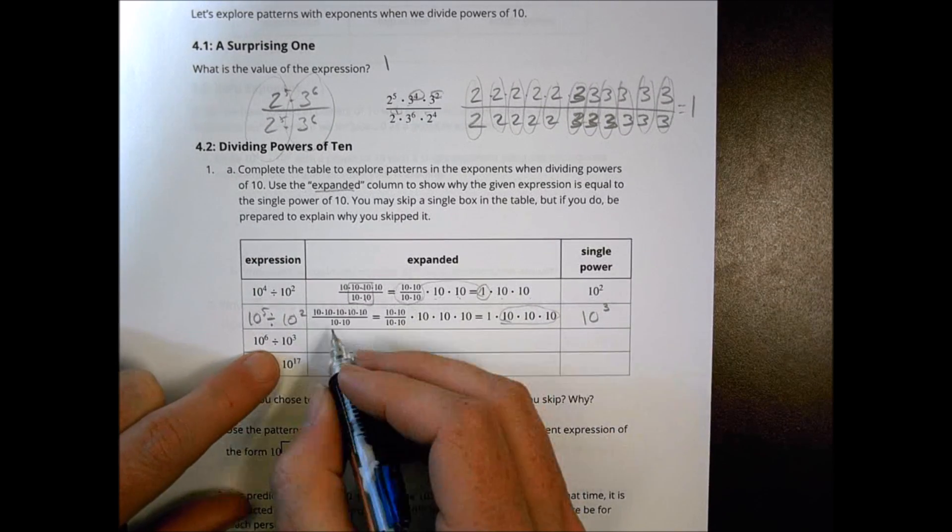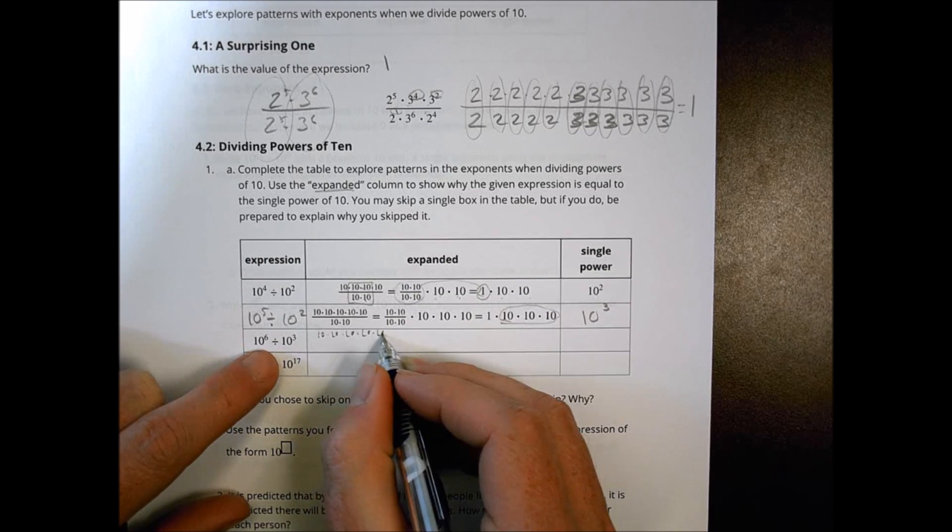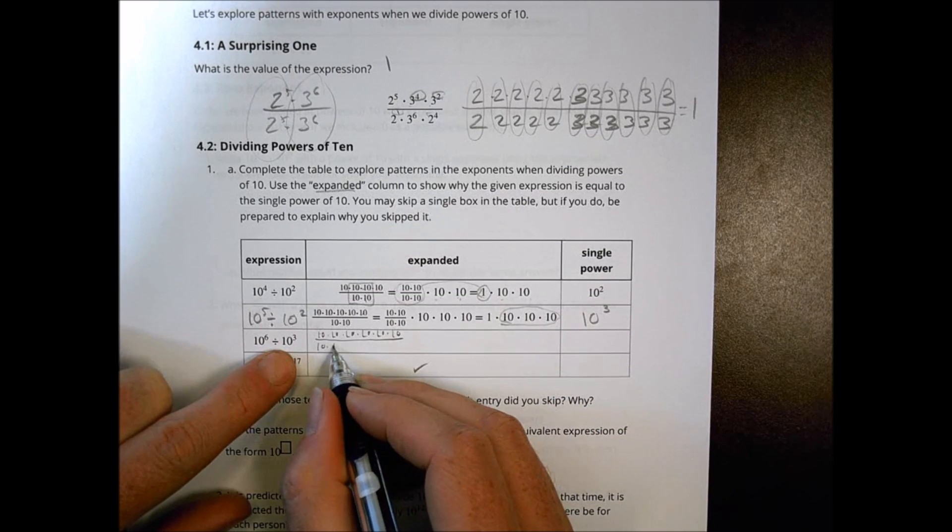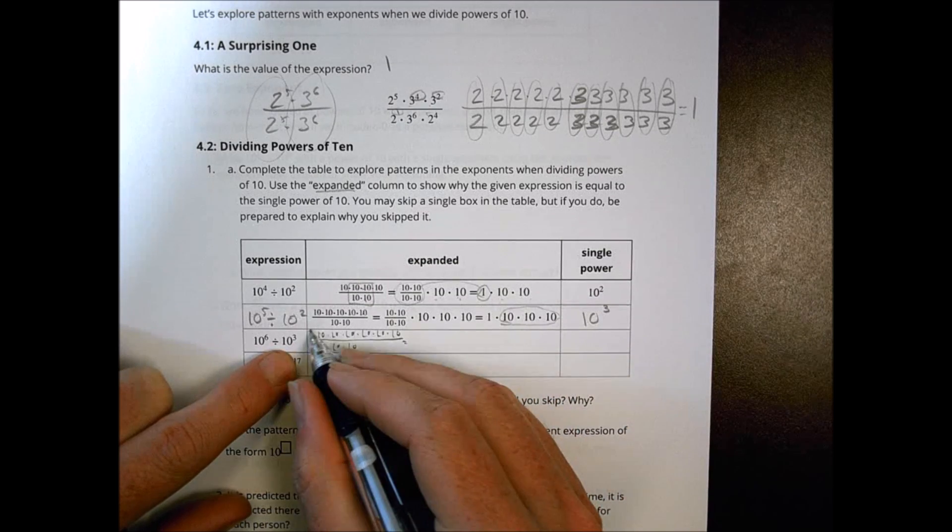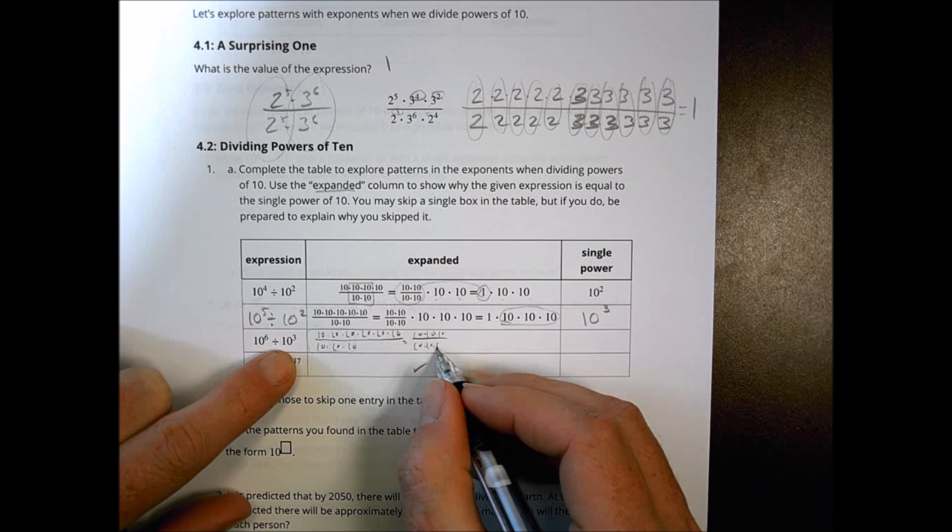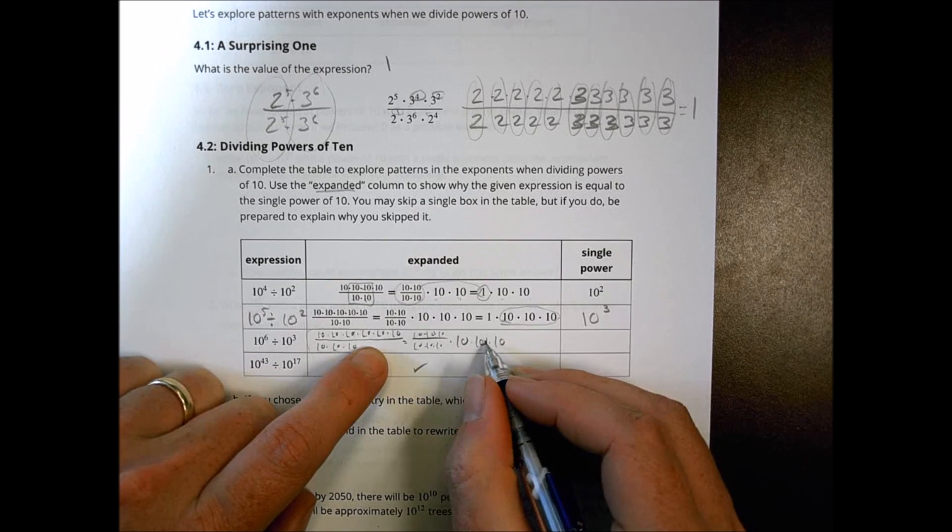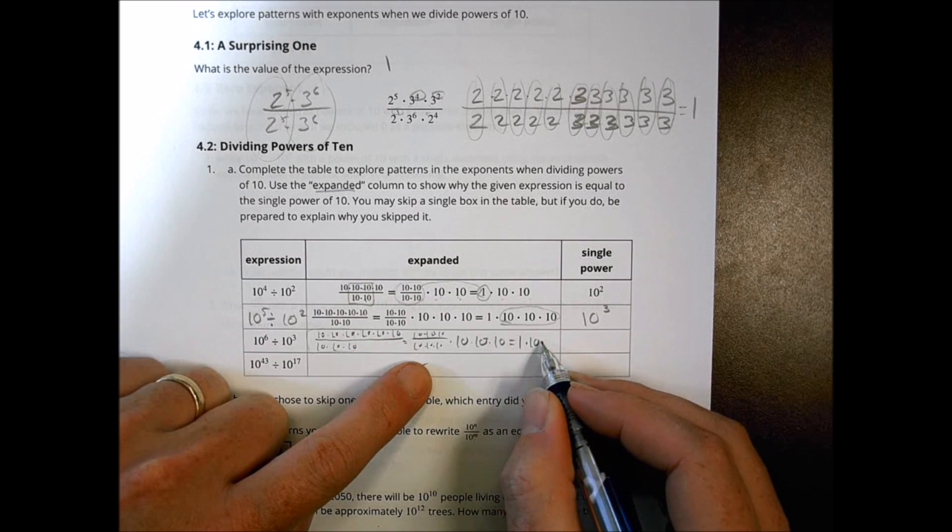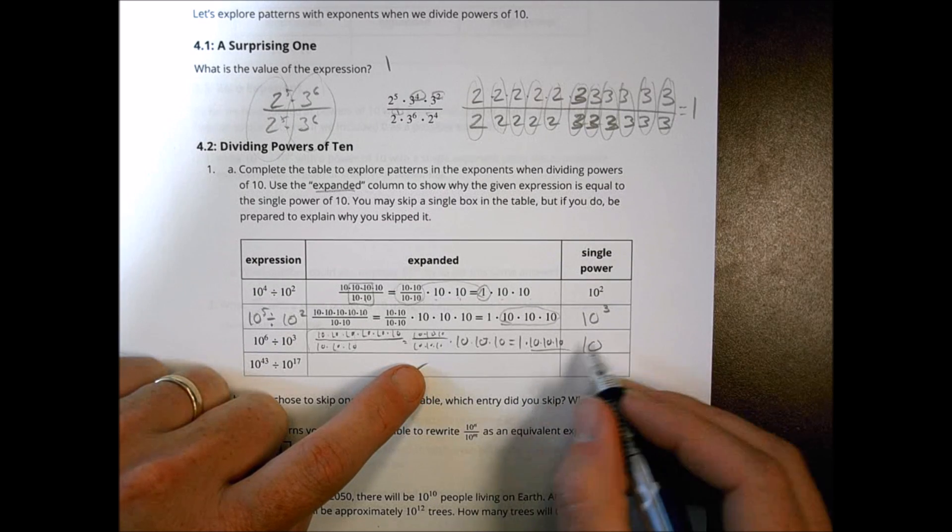Let's do this one here. We're going to put six tens on top, so one, two, three, four, five, and six. We're going to divide that by three of them, one, two, and three. So I'm left then, that all becomes a little cluster of one, right, ten, ten, ten, over ten times ten times ten. I'm left with still a ten, and a ten, and a ten. So that all becomes one times ten times ten times ten. So I'm left with ten to the one, two, three, third power.